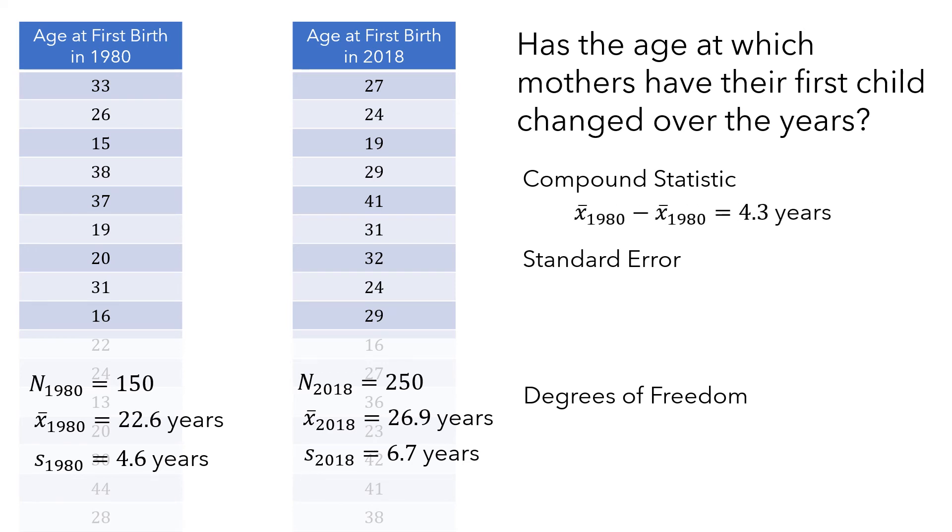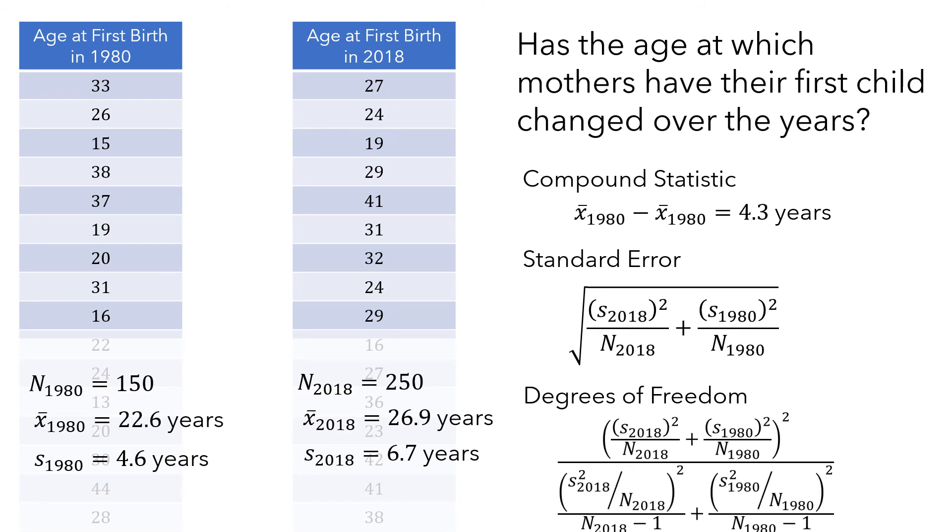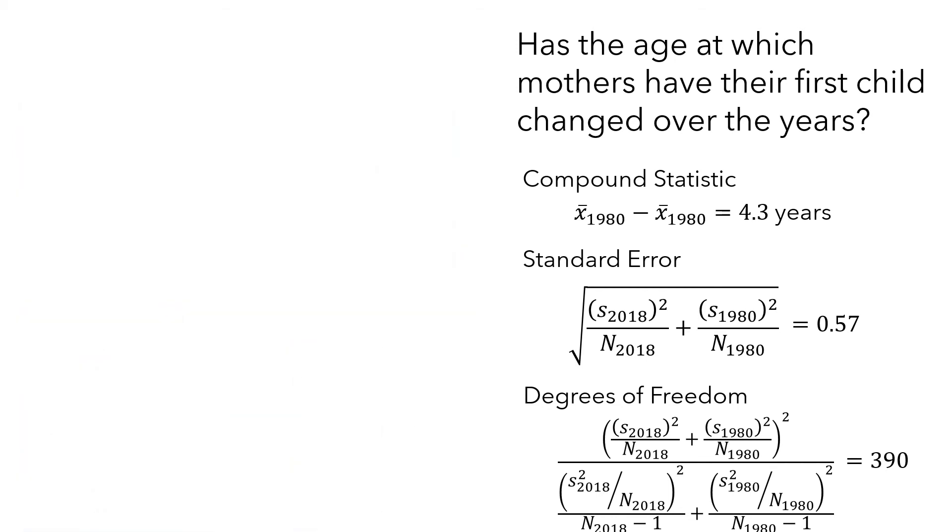Now, the compound statistic is just the difference in sample means. But the standard error and degrees of freedom are much more complicated, and depend a bit on whether or not the two populations have equal variances. If they don't, then the formula for standard error is this, and the formula for degrees of freedom is this. And you usually let your software calculate these. Then you would look at the resulting t-distribution and compute the p-value. In this case, the p-value would be approximately zero.